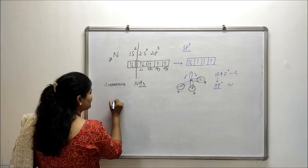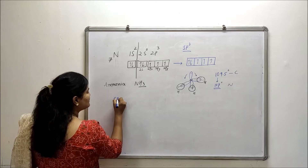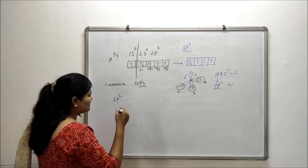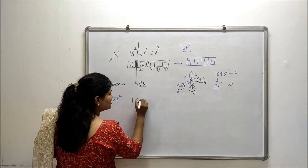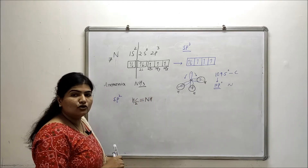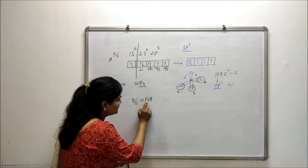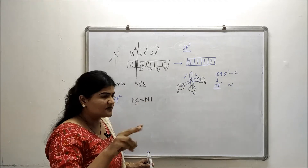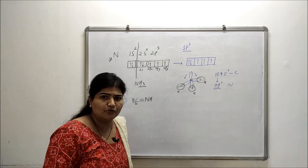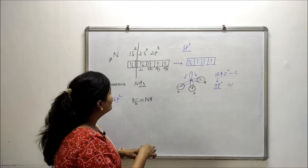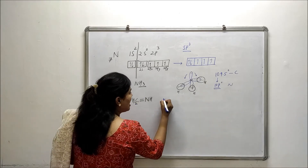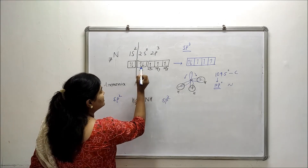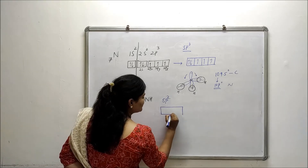Now let's discuss the conditions in which nitrogen undergoes sp2 hybridization. Let's take the example of imine: CH2=NH. In this molecule, nitrogen is attached to carbon and hydrogen — just 2 other atoms. When nitrogen has to form only 2 other bonds, it goes for sp2 hybridization.